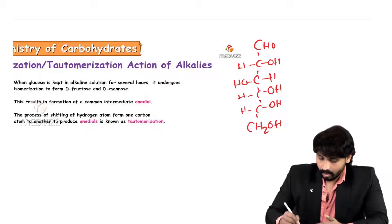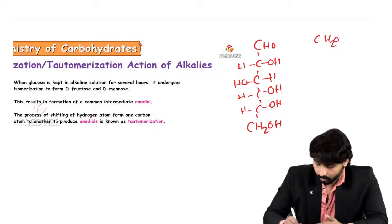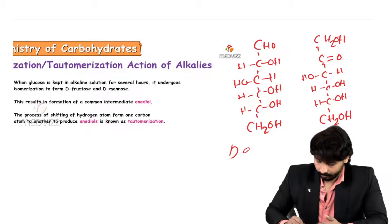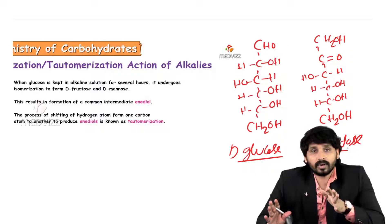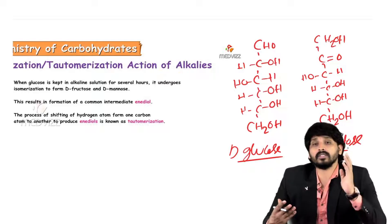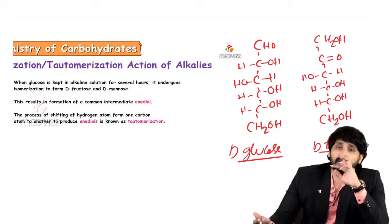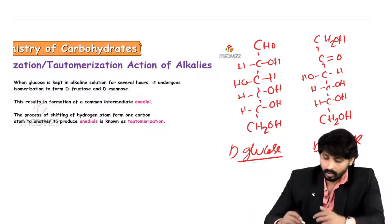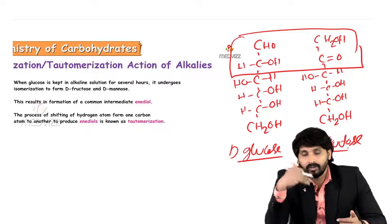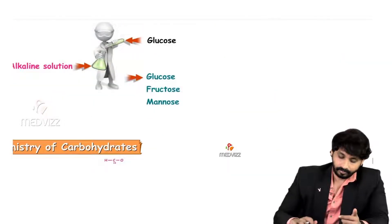Glucose and fructose have the same molecular formula; in fructose, the ketose group is the functional group. Both glucose and fructose have the same structural formula. Mannose also has the same structural formula — glucose and mannose are C2 epimers, differing only at the second carbon. Fructose also differs at the first two carbons from glucose.